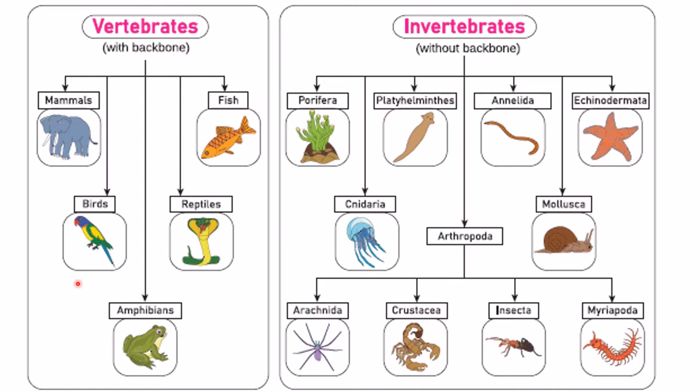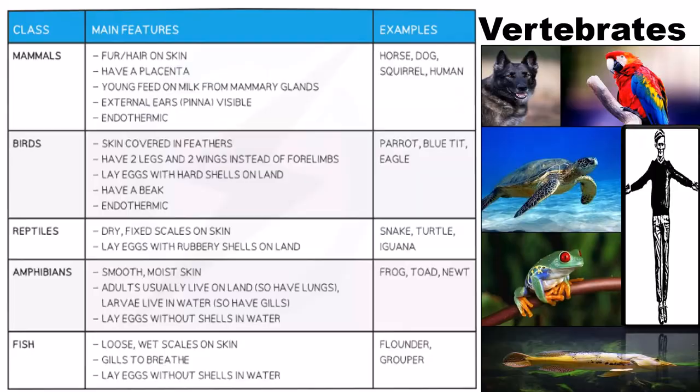The animal kingdom is classified into two groups: vertebrates and invertebrates — with backbone and without backbone. If you look at the classes, mammals, fish, birds, reptiles, and amphibians have a backbone. The invertebrates don't have a backbone, and when you compare arthropods with other invertebrate classes, arthropods have legs whereas some other classes do not.